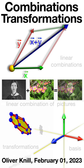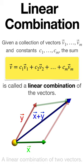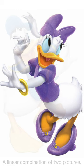To study transformations, it is useful to look at linear combinations of vectors. Given m vectors, we can look at linear combinations of them. We can also produce linear combinations of pictures.